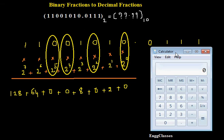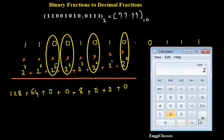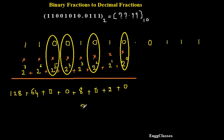Let me use a simple calculator to add all these up: 128 plus 64 plus 8 plus 2. That turns out to be 202. So the integer part of the decimal equivalent is 202. But I haven't yet considered the fractional part, so let me work on that next.